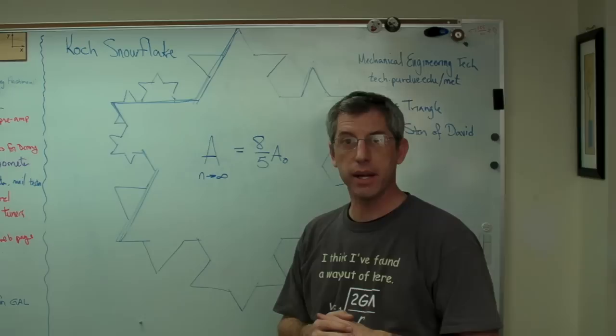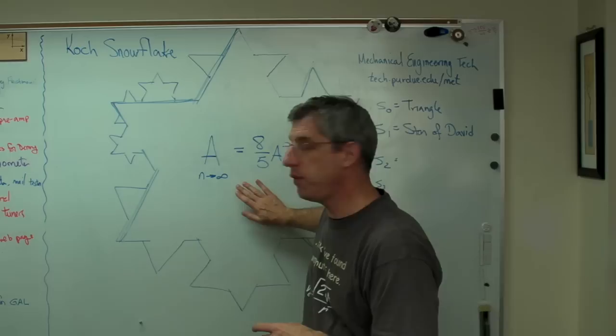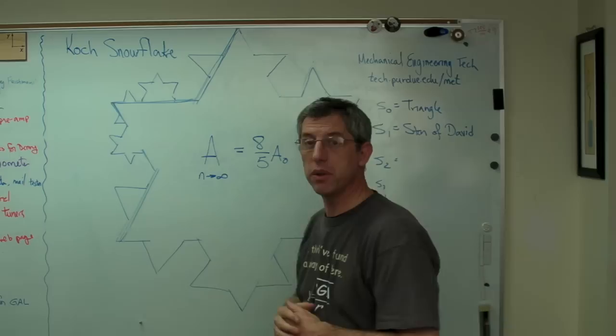So there you go, the Koch snowflake. A very complex shape with very interesting mathematical properties that comes from a very simple set of rules on how to generate it.